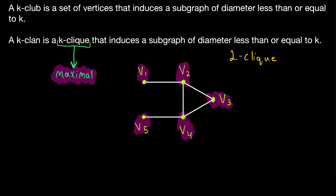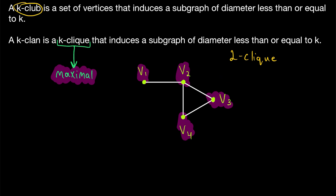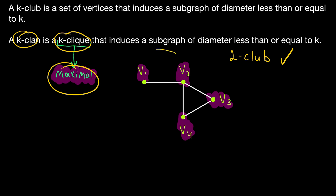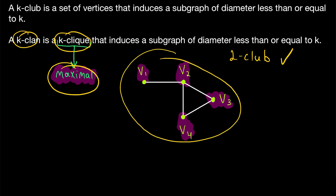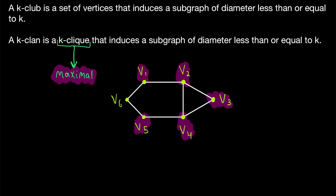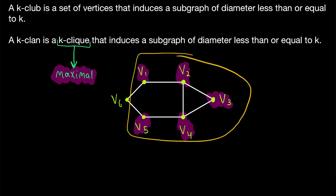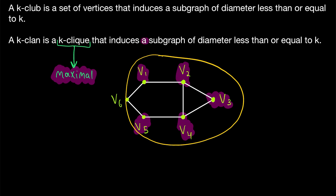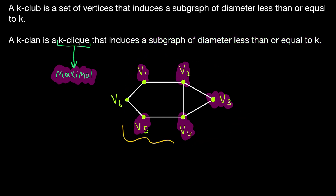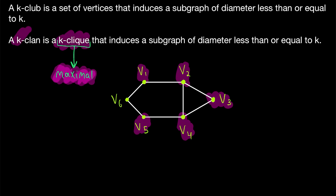Can we delete either of those vertices to get a two-clan? Maybe we delete V5. Now the diameter of this induced subgraph is less than or equal to 2, so this is a two-club. But it's not a two-clan because it's not a two-clique — it's not maximal. Since this isn't a maximal two-clique, it cannot possibly be a two-clan. And this leads to the weird fact that there is no two-clan consisting of these vertices or any subset of them. The five vertices themselves cannot be a two-clan because they don't induce a subgraph of diameter less than or equal to 2, and no proper subset of them can be a two-clan either, because any proper subset will not be a K-clique since it won't be maximal. So with this definition, you have to ensure your set of vertices is a maximal K-clique before it can possibly be a K-clan.